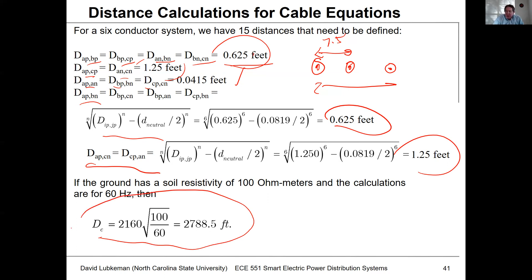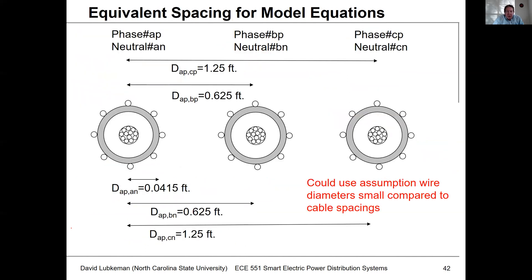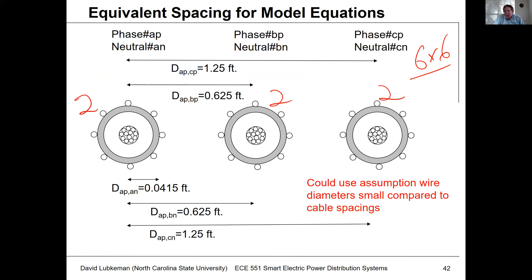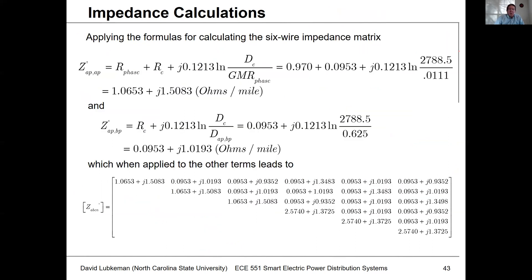For the effect of the earth, we're using 100 ohm-meters, so d_sub_e is 2788.5 feet. This slide summarizes all the different distances. I've got a six-wire system — two wires per phase — which means when I calculate my impedances I'm going to get a six-by-six matrix. I'm going to use the same Carson's equations formulas that I used for overhead lines, just like before for three phase.